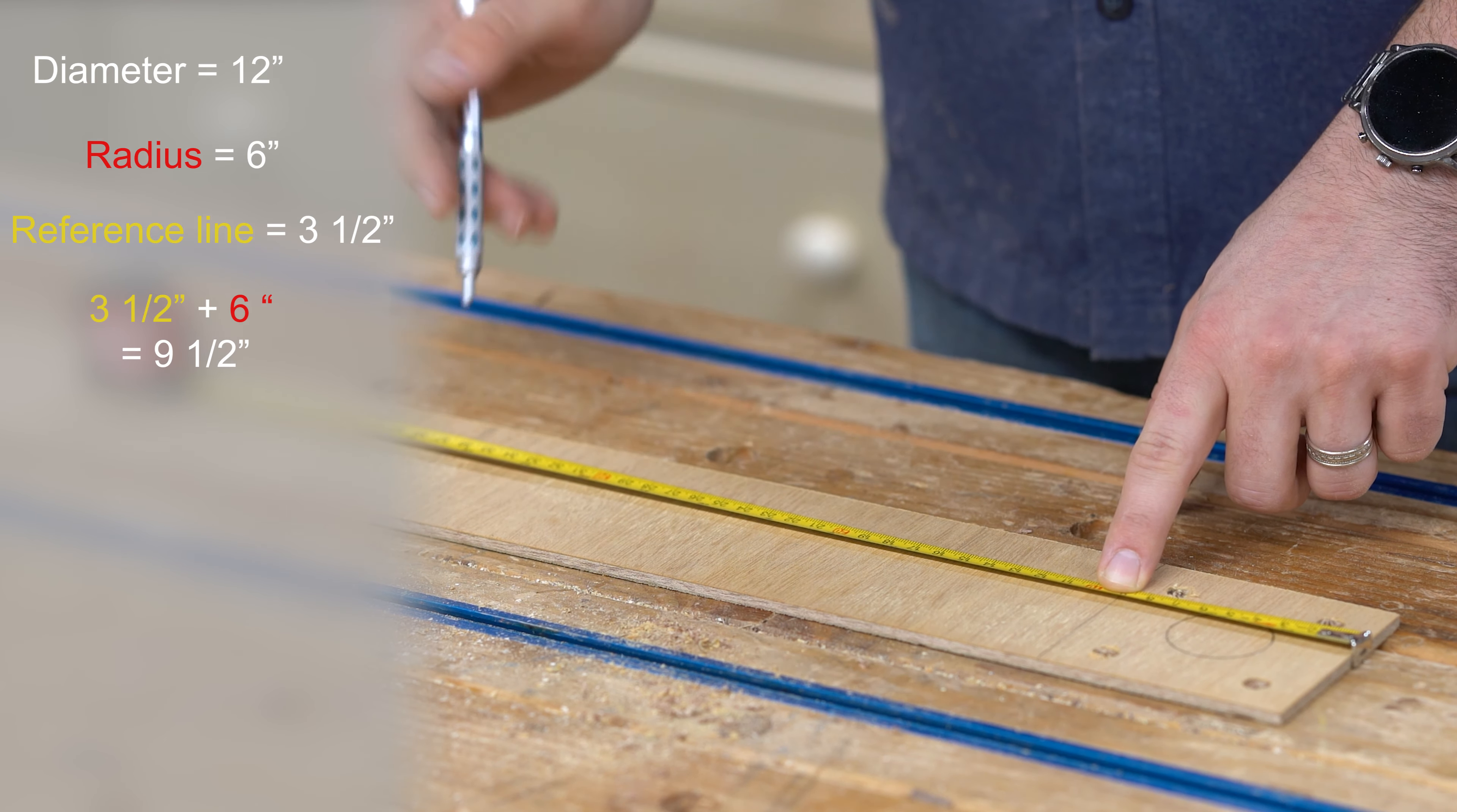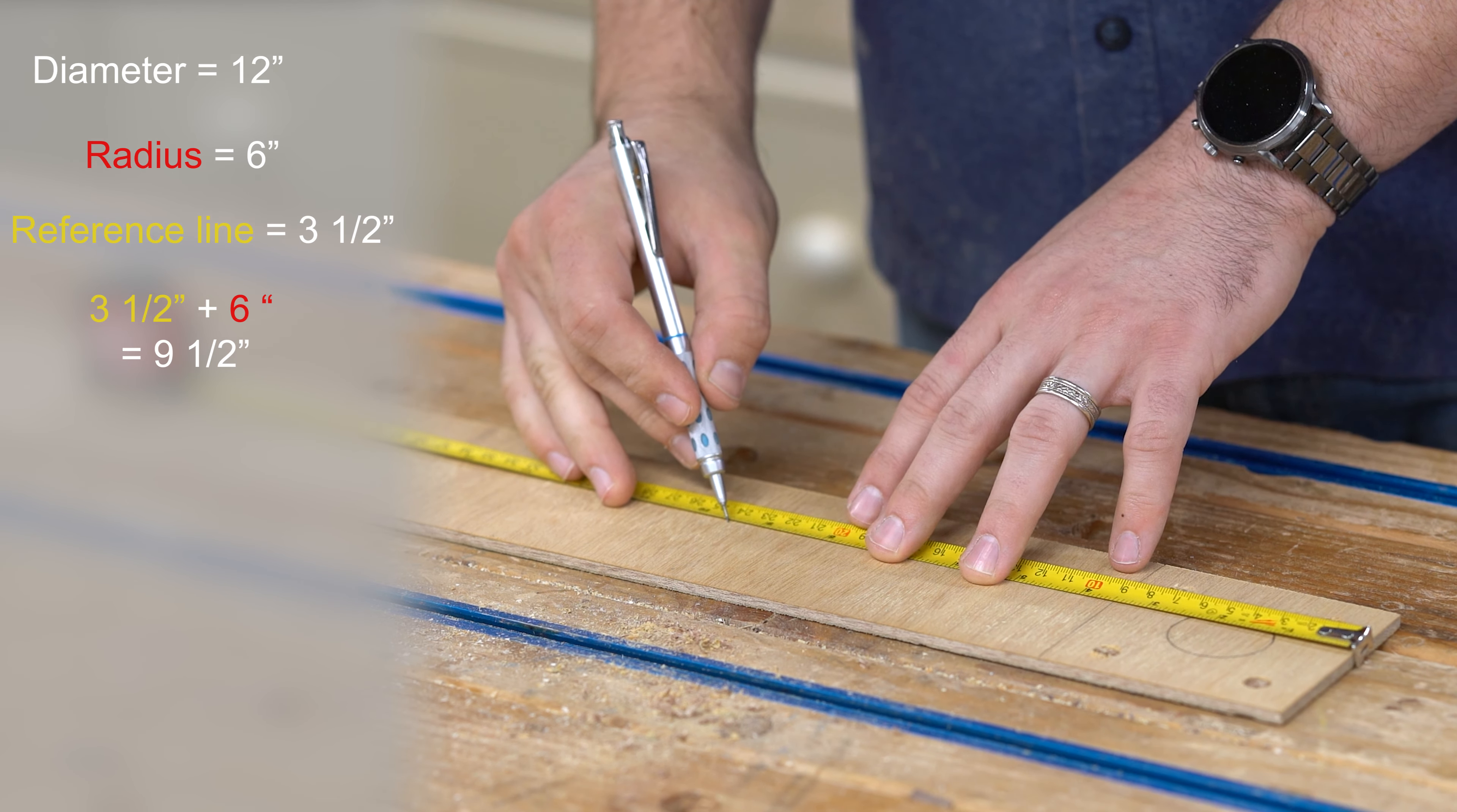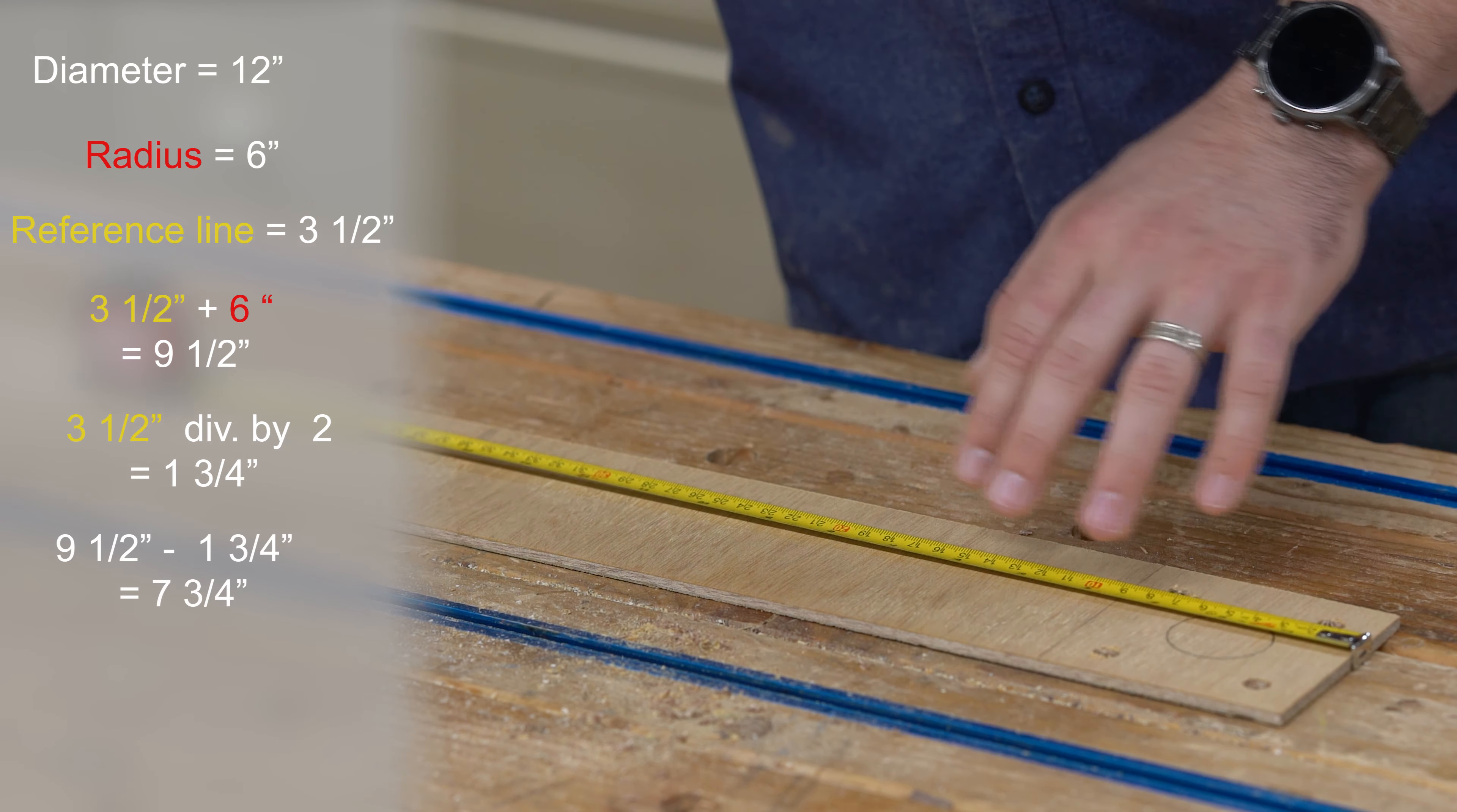Now we need to subtract half the distance across the base plate that we use as a template, because that will tell us how far we are to the center of the bit. The base plate was three and a half inches, so half of that is one and three-quarters. Nine and a half minus one and three-quarters is seven and three-quarters.